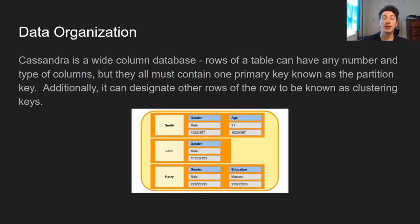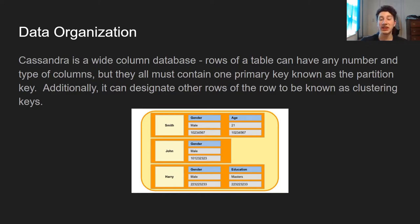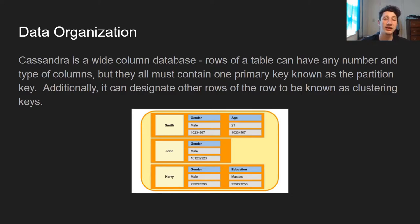In terms of data organization, this is a wide-column store. What that means is you have a primary key — or what Cassandra calls a partition key — and a bunch of other columns which are basically arbitrary. You can also specify some other columns known as clustering keys, which are basically acting as indexes, and I'll discuss those later.